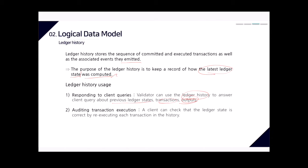A client can audit transaction execution by re-executing each transaction in the history and comparing the computed ledger state to the corresponding ledger state SI and transaction output OI in the versioned database.